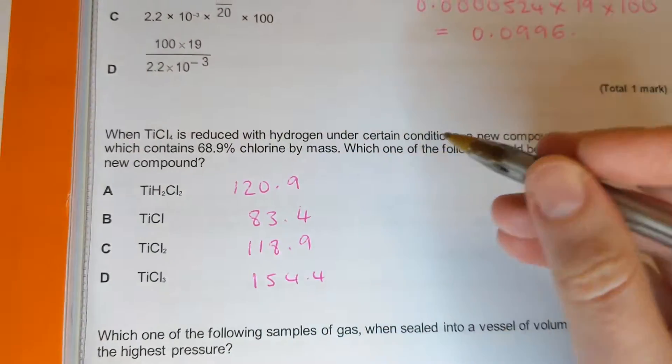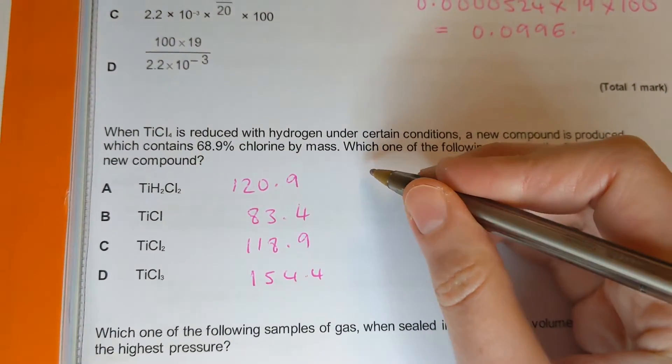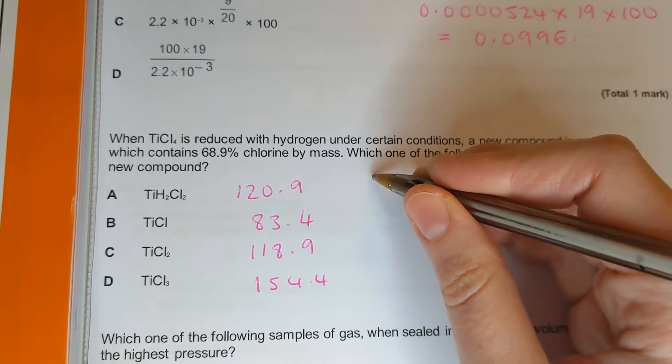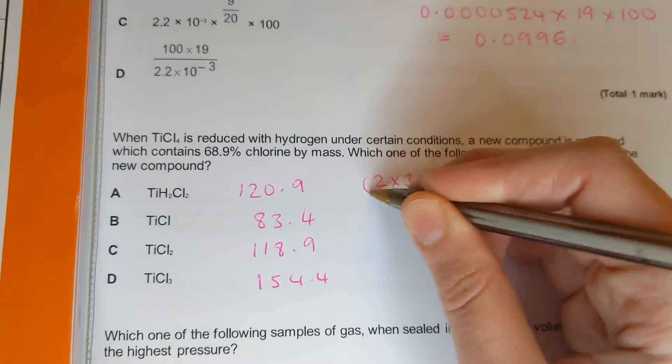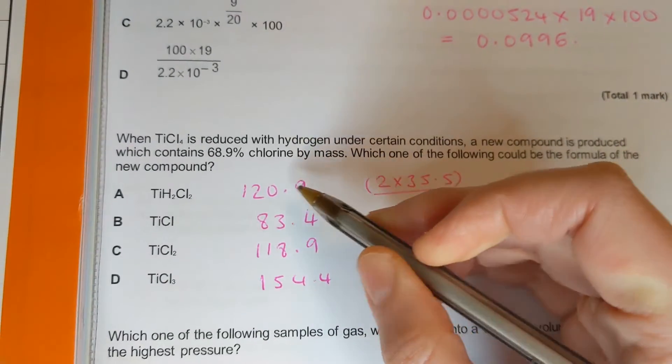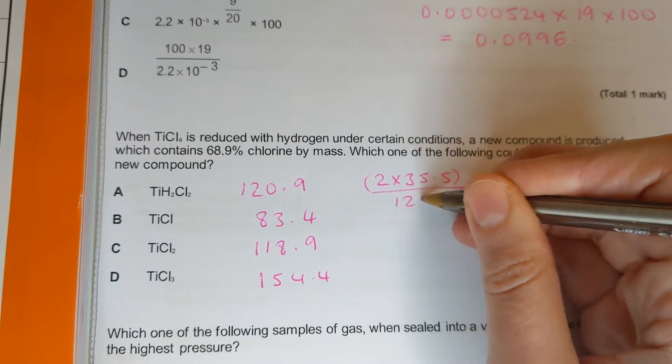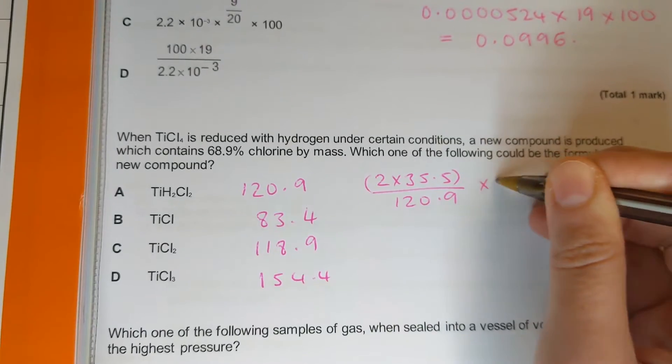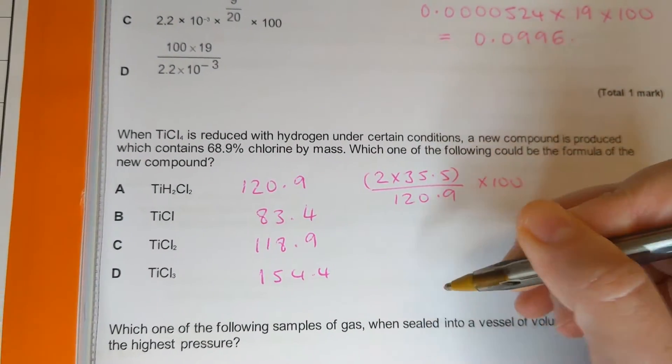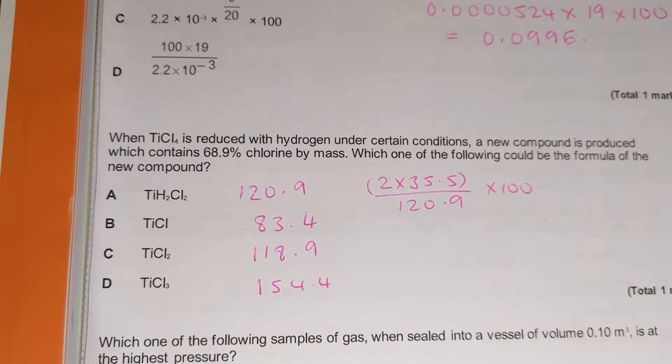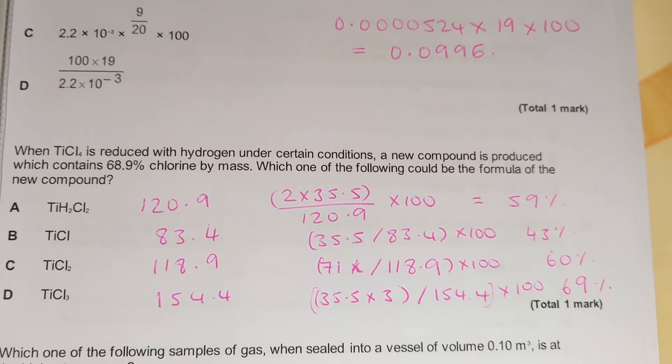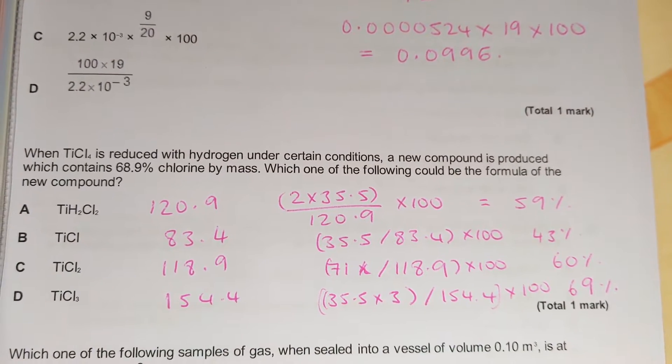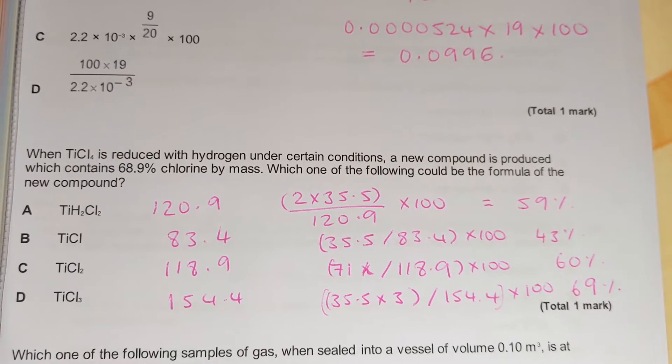The next thing you're going to do, you're going to do the chlorine, the amount of chlorines over this number, then times by a hundred to get the percentage by mass. So here we've got two chlorines so that's going to be two times thirty five point five divided by molar mass of the whole compound times a hundred. I'm going to do the same for all of these.